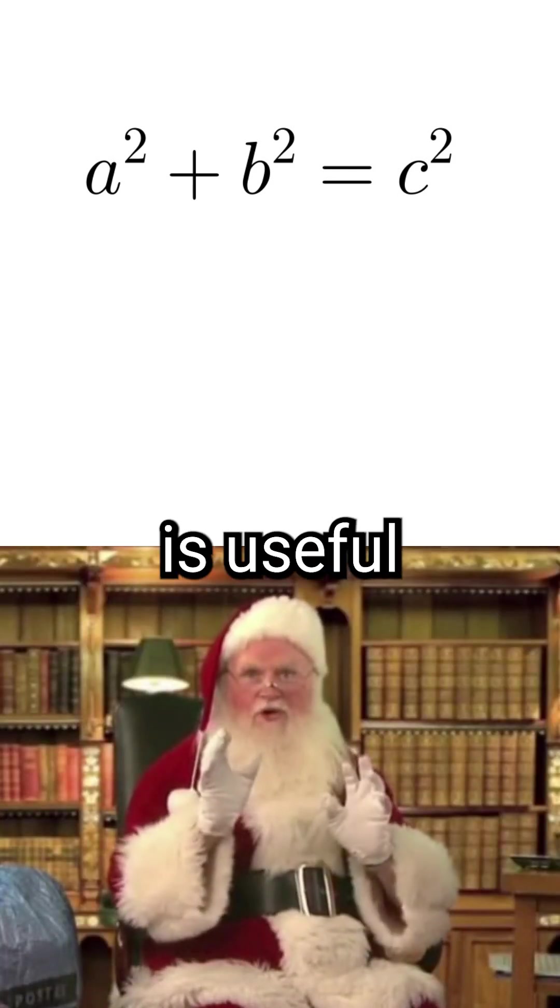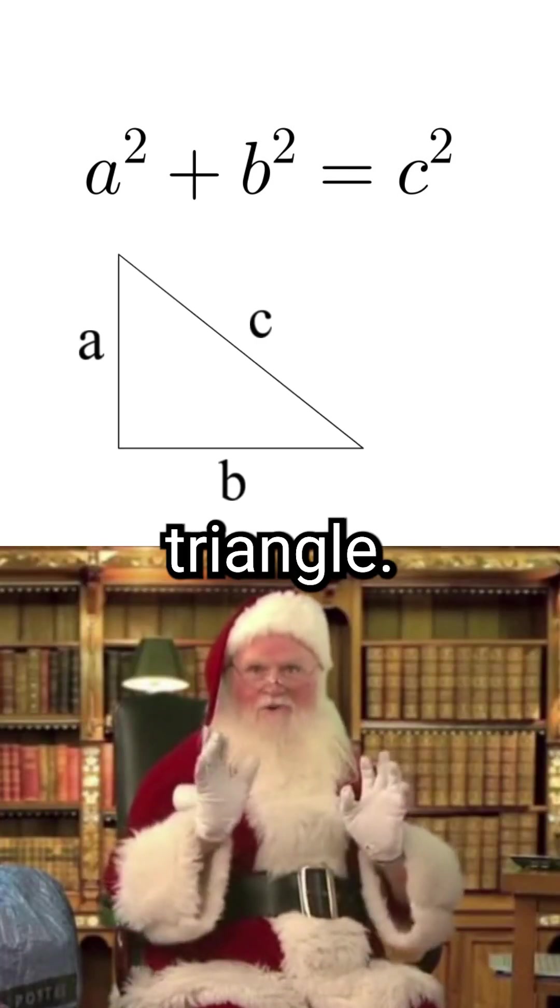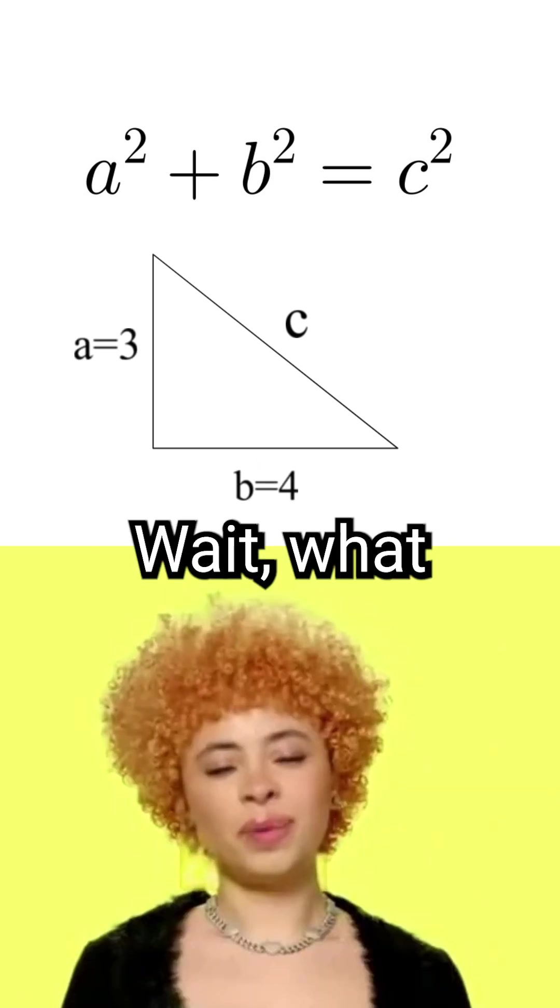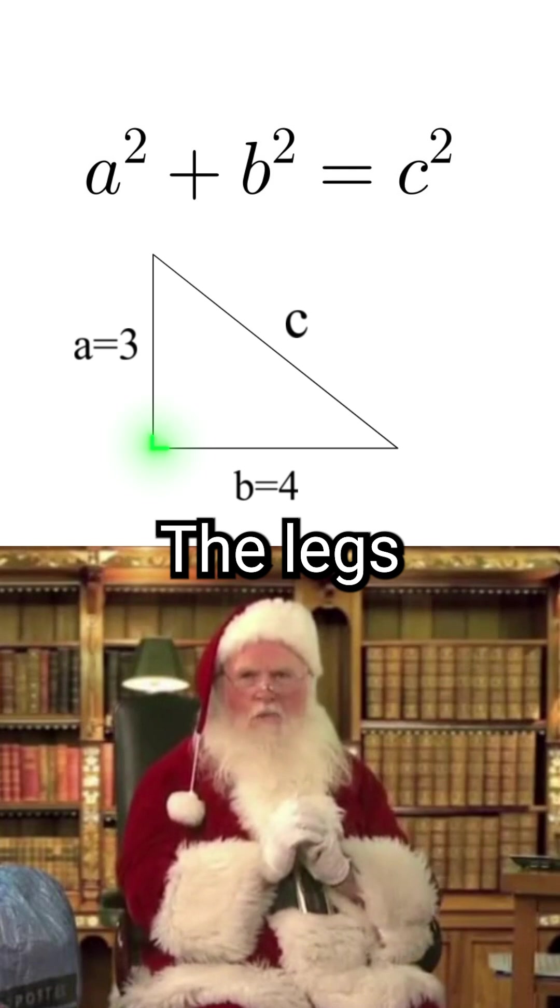One of the many reasons this formula is useful is for finding sides of a right triangle. First, say we know what the legs of this triangle are. Wait, what? Triangles have legs? Yes, the legs are the sides that make up the right angle.